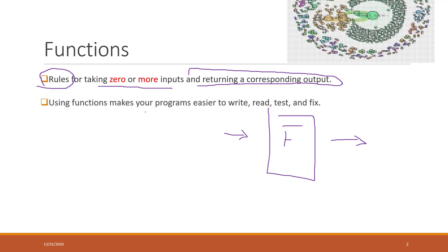Using functions will make the program easier to write. If you have the same calculations to resolve the same problems multiple times, you can use a function to do the same job multiple times, so you don't need to write all the same Python code. It is also easier to read — other programmers just need to understand your function once, and next time they see it, they will know what it is doing. For the same reasons, it is easy to test and fix problems, because we just need to understand the same piece of Python code once.